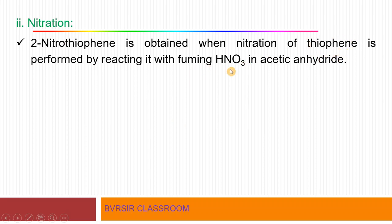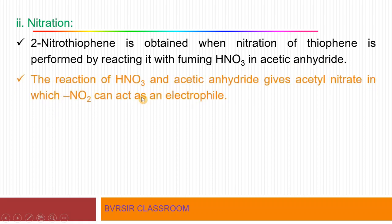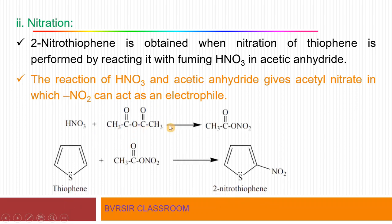For nitration of thiophene, nitric acid and acetic anhydride are required. Nitric acid reacts with acetic anhydride to form acetyl nitrate (CH₃COO·NO₂), and the NO₂ group acts as the electrophile. Acetyl nitrate then reacts with thiophene, and the NO₂ group substitutes at the second position, giving 2-nitrothiophene. This is an electrophilic substitution reaction.